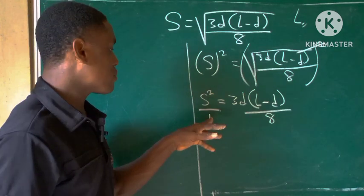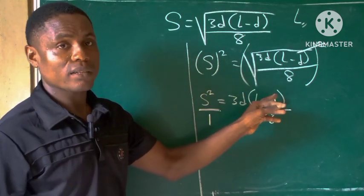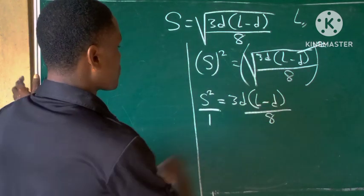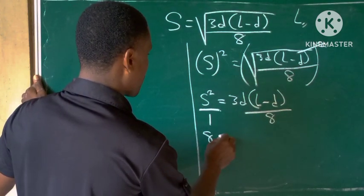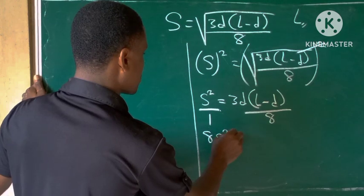We use 8 to multiply s squared and use 1 to multiply everything there. So 8 multiplied by s squared will give us 8s squared.